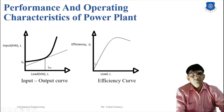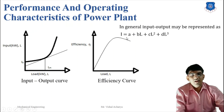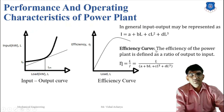The input-output curve is represented by the equation: I = A + BL + CL² + DL³. The efficiency curve is defined as the ratio of output to input for a power plant. Efficiency η = L / I, where L is the output rate and I is the input. Substituting the input expression: efficiency = L / (A + BL + CL² + DL³).